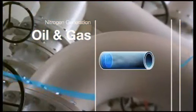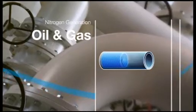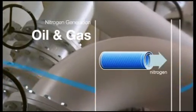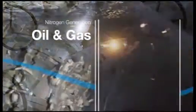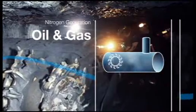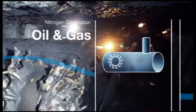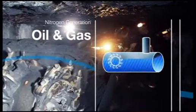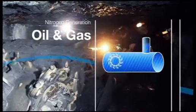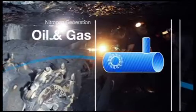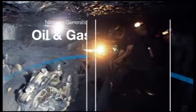Nitrogen is also used to flush out pipes used to transport inflammable substances. Underground drilling operations, such as those performed in coal mines, often release fire damp and inflammable gas. Flushing with nitrogen also helps to prevent fires or explosions in such situations.